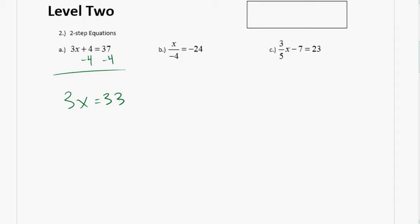All right. Now what? Is x by itself? So you have to divide each side by 3, because you don't want to know what 3x is, you want to know what 1x is. So x equals 11. Questions on the first one?